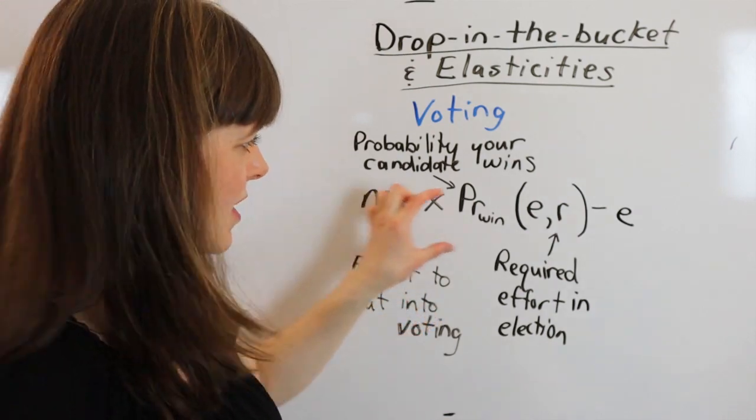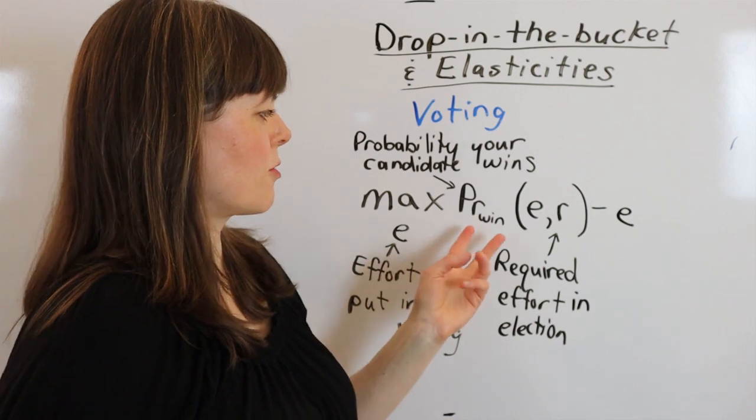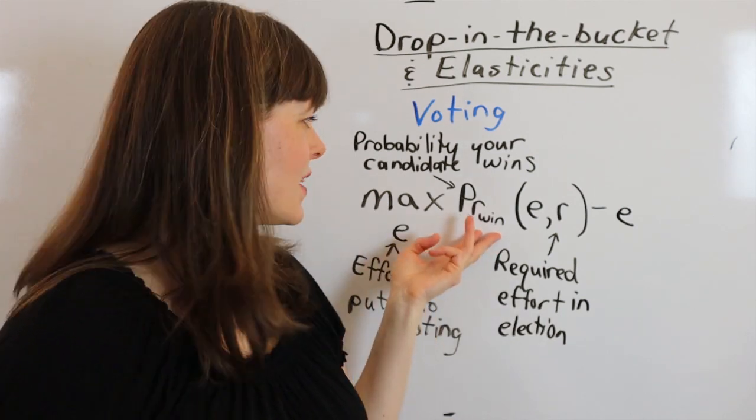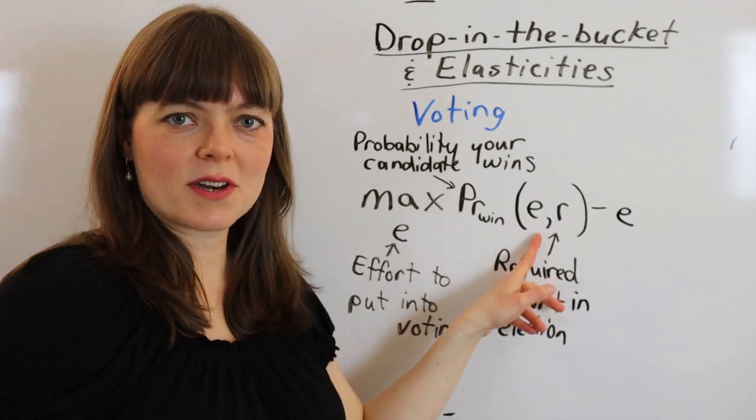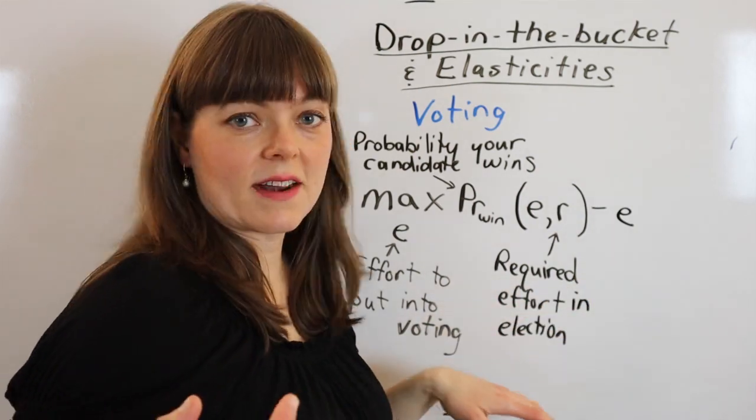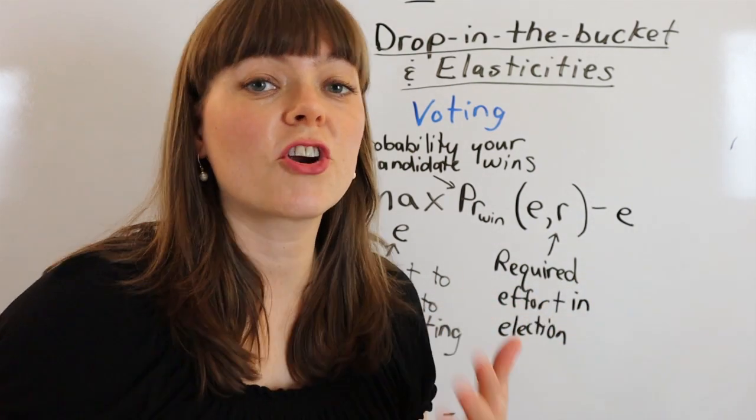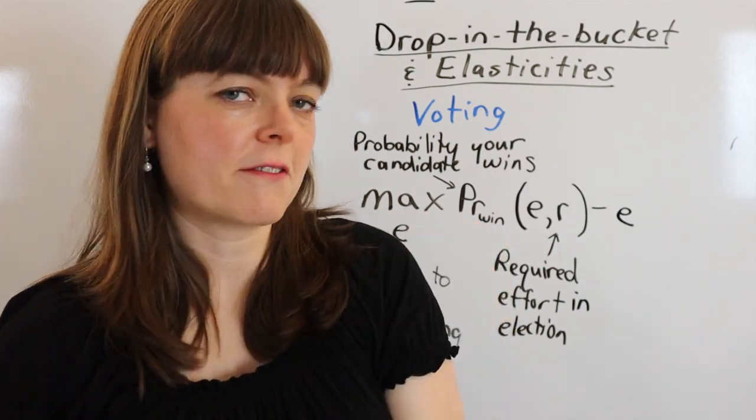It's the effort that this particular voter is willing to put into voting. Their benefit from voting is the probability that their candidate wins, which depends on the effort they're willing to put in and the required effort to vote in that particular election. So how many hurdles are there to voting? Do you have to wait in a two-hour line? Is it a 15-minute line?